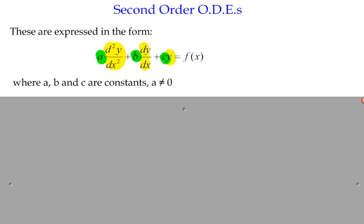We usually order them starting with the second derivative first. That's our standard form: a d²y/dx² plus b dy/dx plus cy equals f(x) on the right-hand side. It's important to note that a, b, and c are constants.